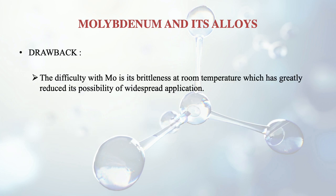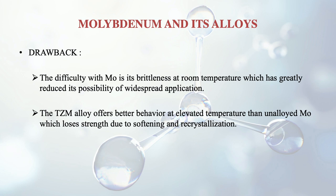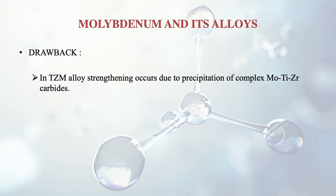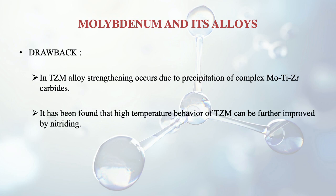The difficulty with molybdenum is its brittleness at room temperature, which has greatly reduced its possibility of widespread application. The TZM alloy offers better behavior at elevated temperatures than unalloyed molybdenum, since molybdenum loses strength due to softening and recrystallization. TZM alloy has very high creep resistance above 1000 degrees centigrade. Its strengthening occurs due to the precipitation of complex molybdenum, titanium and zirconium carbides. The high-temperature behavior of TZM can be further improved by the nitriding process.